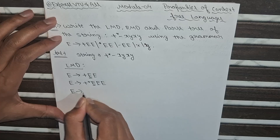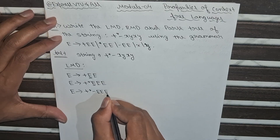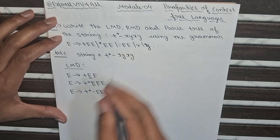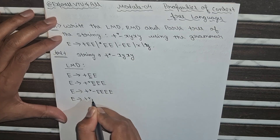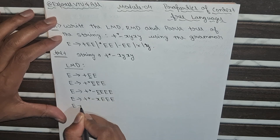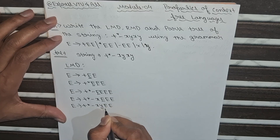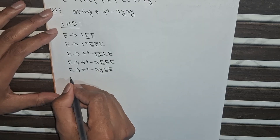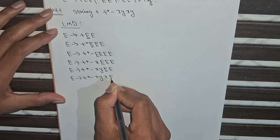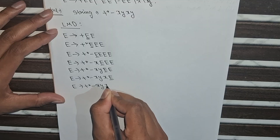So E implies +*-EE and E and E. Now I want x, so I am putting E → x. So E implies +*-xEE and E. Like this I will put all values: +*-xyEE. Then I will put the value of this E as x, giving +*-xyxE. Now the last variable gives +*-xyxy. I got the string which I wanted in the question.